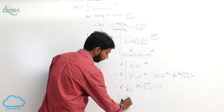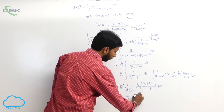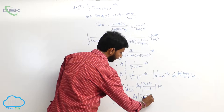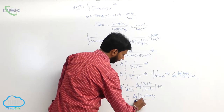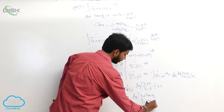Substituting back t equals tan(x/2), the answer is (1/3) log mod of (3 plus tan(x/2)) by (3 minus tan(x/2)) plus some constant.